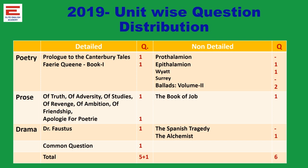Interestingly, one more question was there that was common because it is a collection of different works — who is the father of criticism, father of poetry, father of prose — so for that, one question. Strictly, the unit structure is followed. If you closely analyze, from detailed work only five questions, and from non-detail, six questions are asked. So we understand there is no distinction between detailed and non-detailed work. It is very important — I have been suggesting you go for detailed analysis of all works, whether detailed or non-detailed.